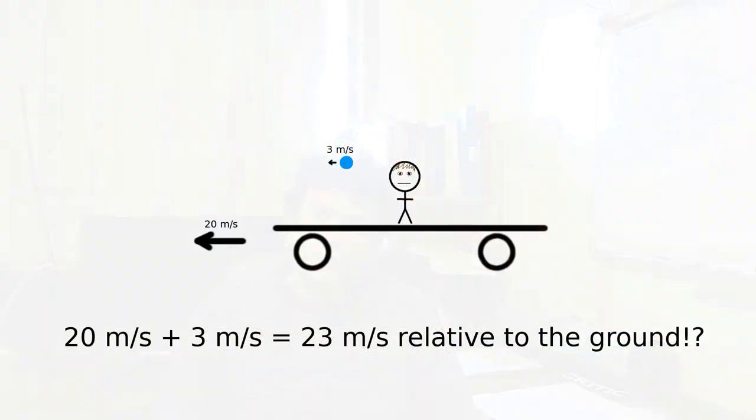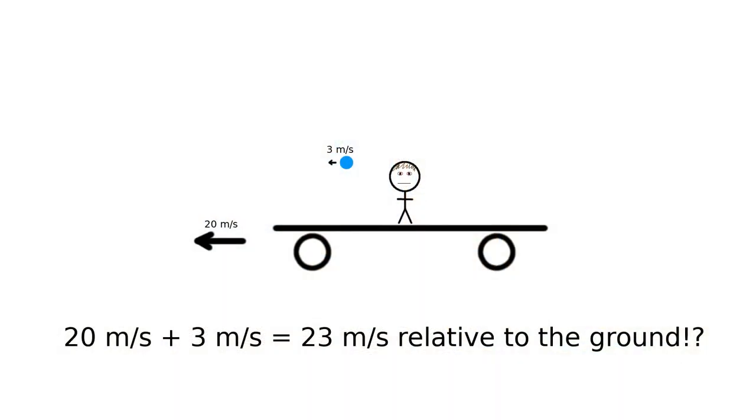For example, someone on a train could throw a ball at 3 meters per second. The train is travelling at 20 meters per second, so in the frame of the ground, that ball is travelling at 23 meters per second.